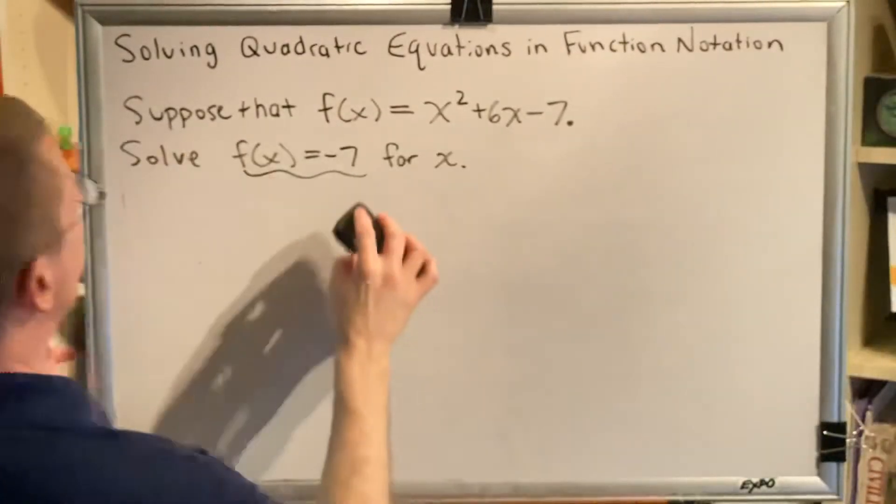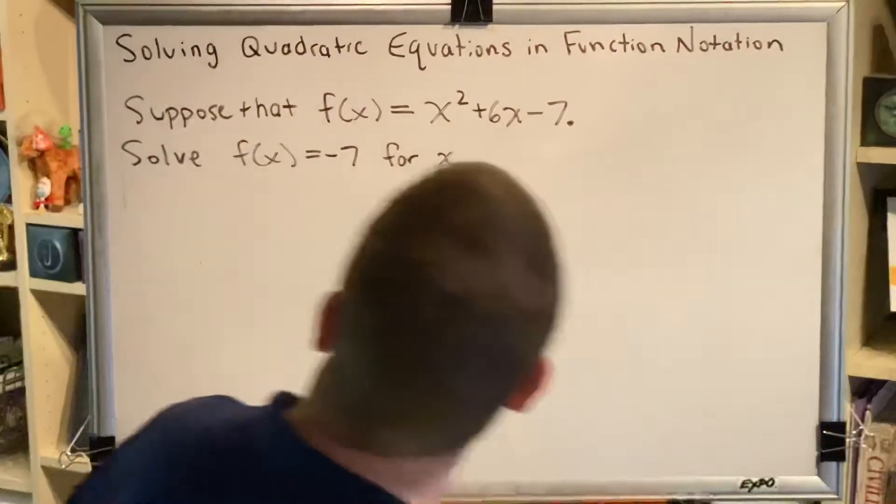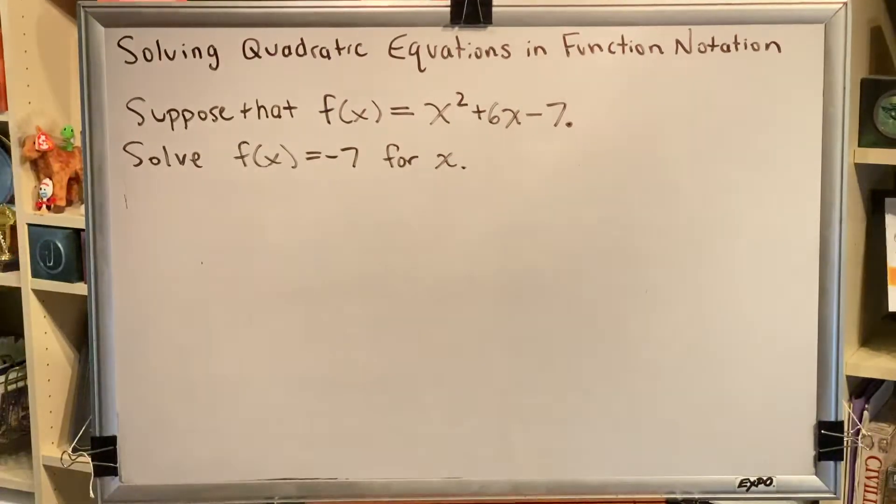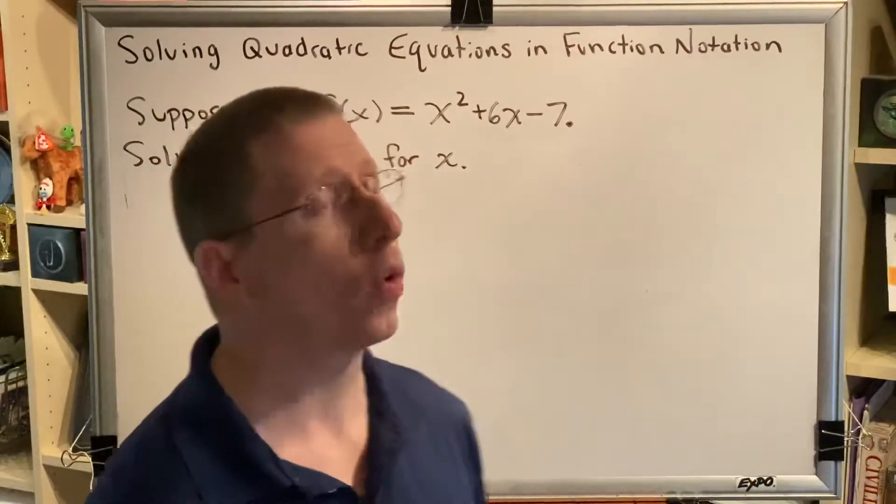The reason why that is not true is because x and f of x mean different things. x is the input to a function. f of x is the output. Therefore, it is a value for y.